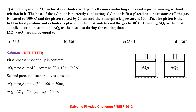An ideal gas at 30°C enclosed in a cylinder with perfectly non-conducting sides and a frictionless piston. The base is perfectly conducting. The cylinder is placed on a heat source till the gas is heated to 100°C, the piston rises by 20 cm, and atmospheric pressure is 100 kPa. The piston is then held in final position and the cylinder is placed on a heat sink to cool the gas to 30°C. Denoting ΔQ1 as heat supplied during heating and ΔQ2 as heat lost during cooling, ΔQ1 - ΔQ2 would be equal to.